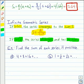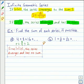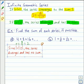So in this example, we want to find the sum of each series if possible. For the first series, we can find the common ratio by dividing 8 by 4, and that gives us 2. So since the absolute value of r is greater than or equal to 1, the series diverges and has no sum.